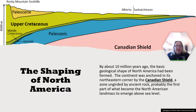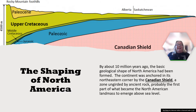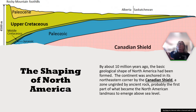By about 10 million years ago, the basic geological shape of North America had been formed. The continent was anchored in its northeastern corner by the Canadian Shield — a zone undergirded by ancient rock, probably the first part of what became the North American landmass to emerge above sea level. It's located around Alberta and Saskatchewan. That unyielding rock allowed the landmass to sort of push and park itself there.